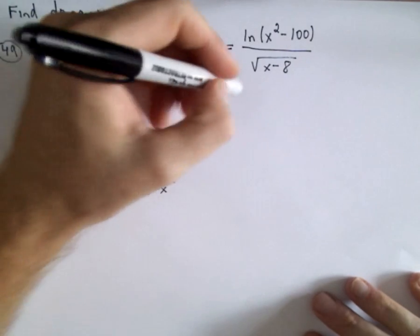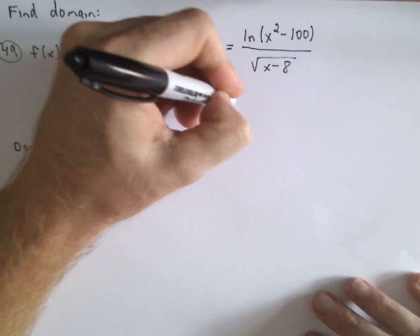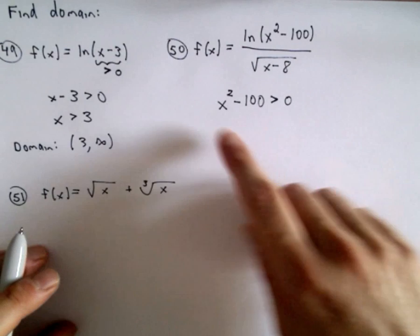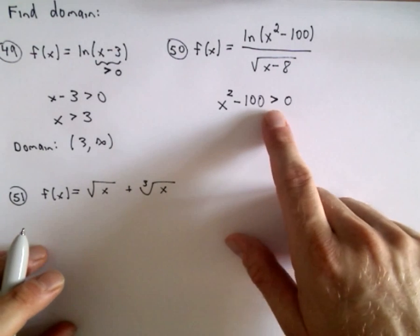So I guess let's just work on the numerator. So I know that the stuff inside of the logarithm, we said that has to be strictly greater than zero. So I've got x squared minus 100 greater than zero.